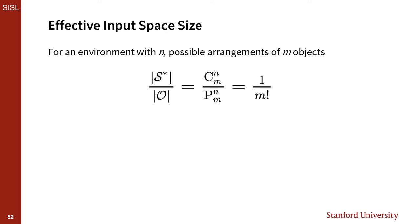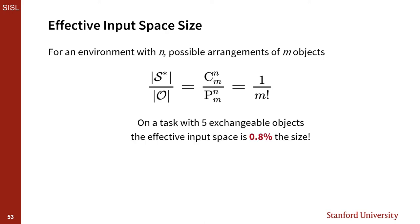To understand the benefits of this attention mechanism, consider an environment with n discrete possible states arranged from m different objects. Our attention mechanism transforms our input space from one that's sensitive to permutations to one that's only sensitive to combinations of objects, reducing our effective input size to 1 over m factorial of the original input space. On a task with just five exchangeable objects, the effective input space size using the attention mechanism is just 1% the size of the original representation.